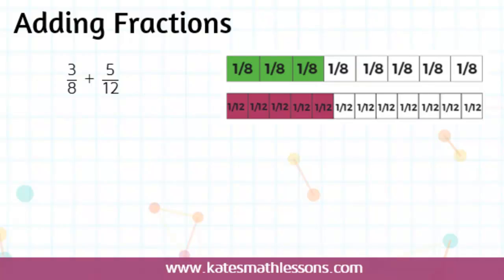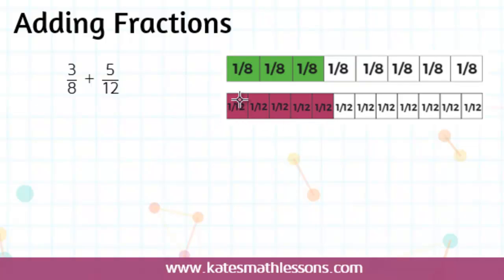For the second fraction, 5/12, that means the whole has been split into 12 equal pieces. You can see that these pieces are smaller than the 8ths, and we have 5 out of the 12 pieces. When fractions have different denominators, the size of each part is different. So the 8th pieces are larger than the 12th pieces, and we can't just count them up as they are because they are not the same size.